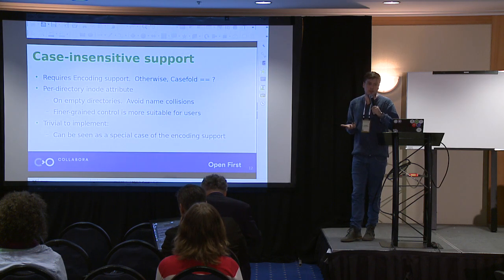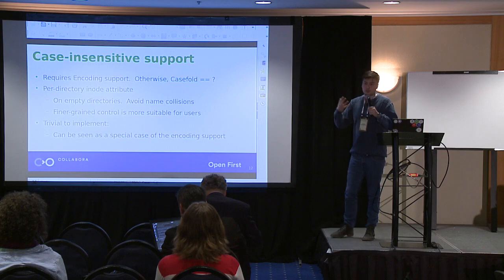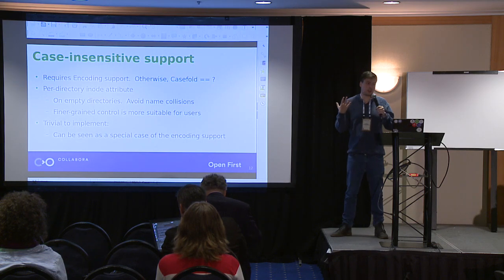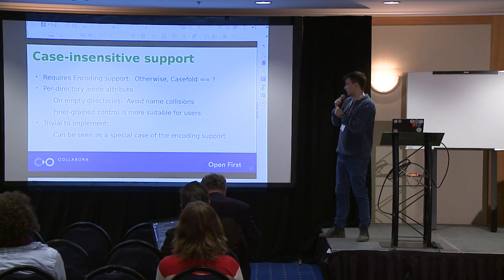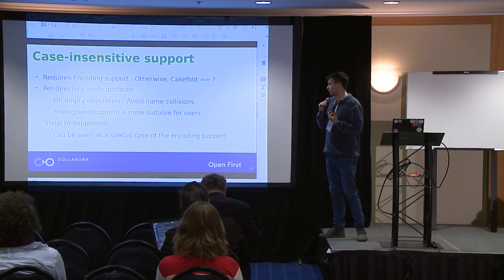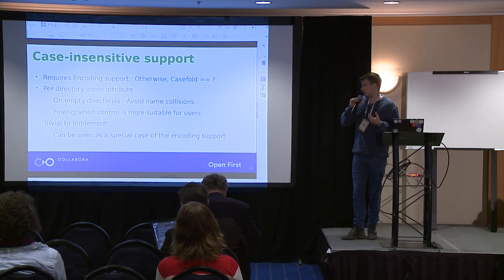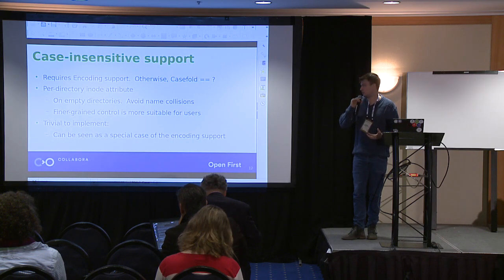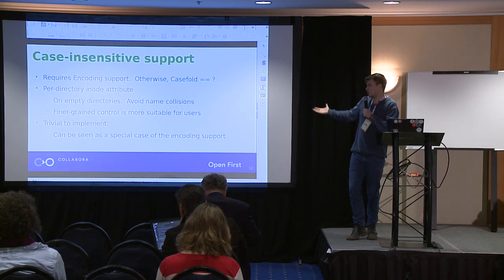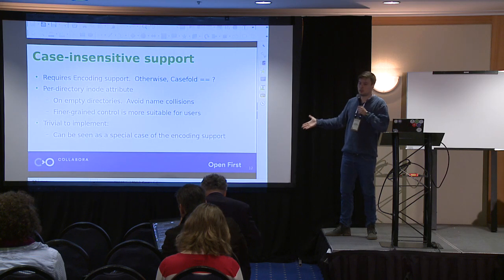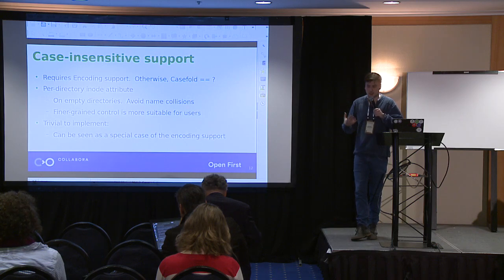Name collisions would be two different files that are equivalent only in a case-sensitive fashion — meaning they only differ by casing. We believe that this finer-grained control of doing it per directory is more suitable for users. And this case-sensitive support becomes trivial to implement once you have encoding support, because it can be seen as just a special case of encoding — now I have a larger set of equivalent sequences.